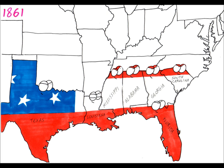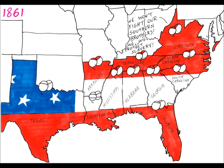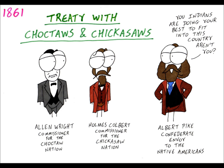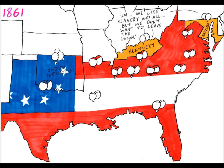Refusing to send troops against their neighbors, slave states Virginia, North Carolina, Tennessee, and Arkansas actually joined the Confederacy, with the capital getting moved to Richmond, Virginia. Some Native American tribes in the Indian Territory sided with the Confederacy, becoming their allies, hoping for support from the Confederacy.